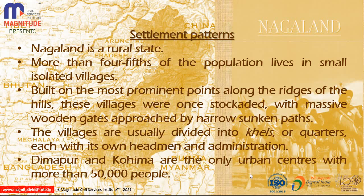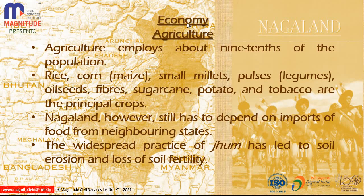The main urban centre, Dimapur, has a population of around 50,000. Regarding agriculture, about nine-tenths of the population depends on farming. Principal crops include rice, corn, small millets, pulses, legumes, oilseeds, fibres, sugarcane, potatoes, and tobacco. However, Nagaland still has to depend on imports of food.